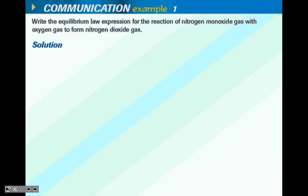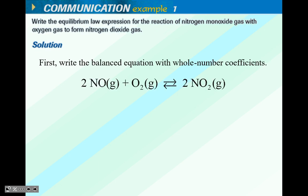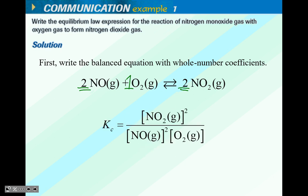Here's an example: write the equilibrium law expression for the reaction of nitrogen monoxide gas with oxygen gas to form nitrogen dioxide gas. First write the balanced equation with whole number coefficients. We have a coefficient of 2 for NO, 1 for O2, and 2 for NO2 — those become exponents. All species are gases, so we include them all. It's a question that would show up on a quiz.